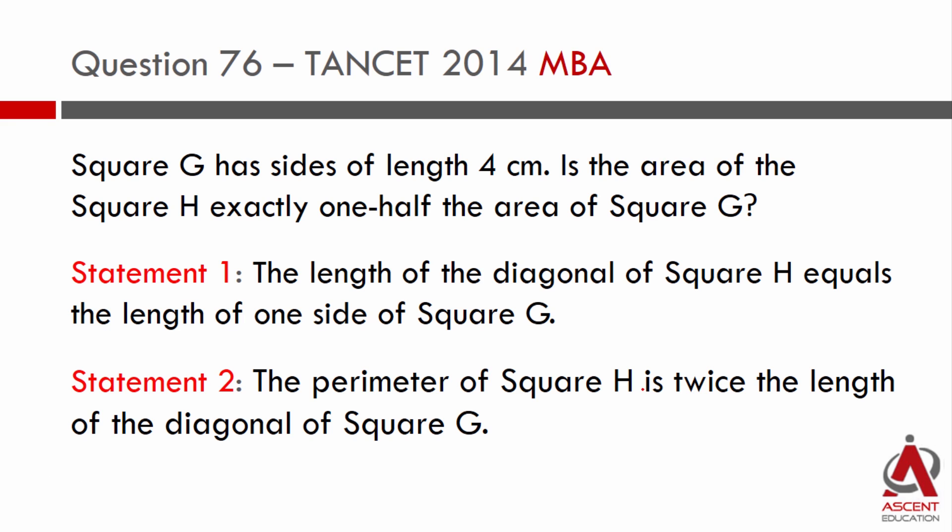Square G has sides of length 4 cm. Is the area of square H exactly one-half the area of square G?